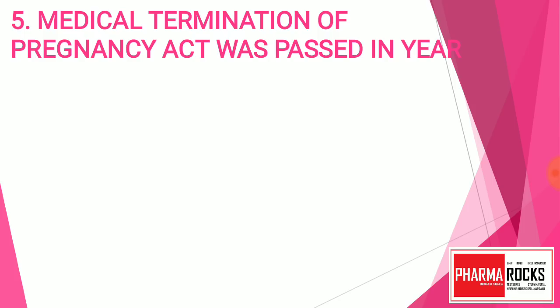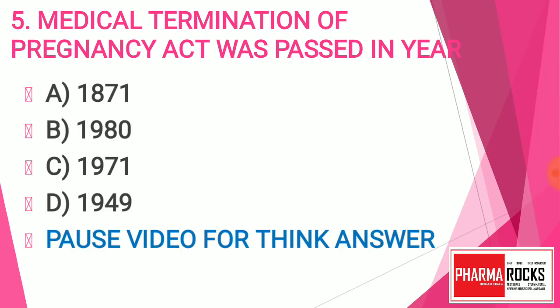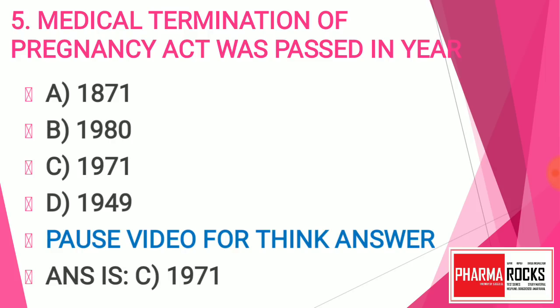Question number five: The Medical Termination of Pregnancy Act was passed in the year of — Option A: 1871, Option B: 1980, Option C: 1971, Option D: 1949. Find out the year in which the MTP Act was passed. The answer is C — 1971.